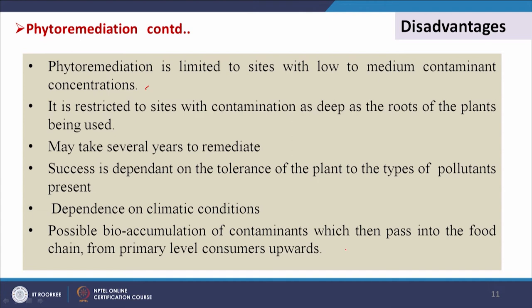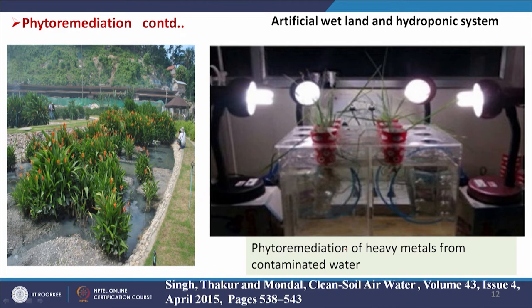A drawback is that pollutants may be accumulated in biomass and passed upward through the food chain. This slide shows photographs of artificial wetlands where plants have been grown for wastewater treatment, and a lab-scale setup where Vetiveria zizanioides was grown under controlled light for removal of arsenic and fluoride from contaminated water. Phytoremediation also has disadvantages: it is limited to sites with low to medium contaminant concentrations, restricted to the depth of plant roots, may take several years to remediate, and success depends on plant tolerance to pollutants and climatic conditions.